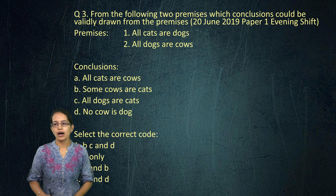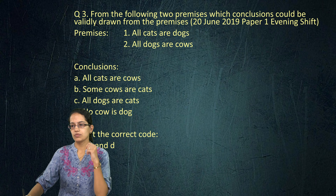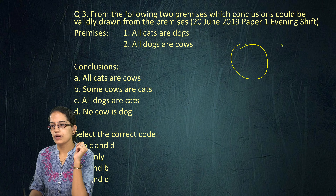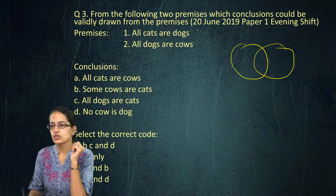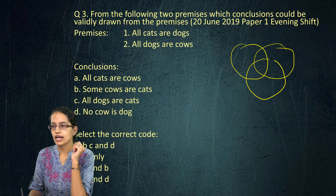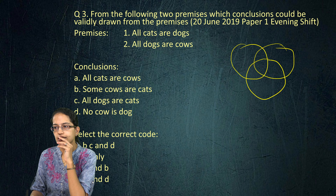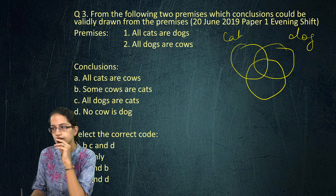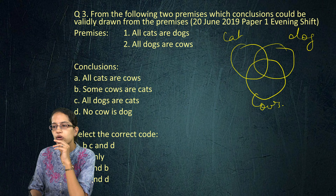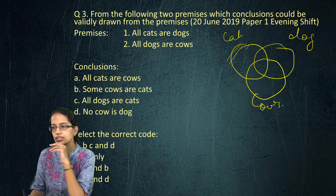The next question talks about a syllogism problem. So let me draw the simple Venn diagram that I always do. You have the syllogism problem here with two premises. All cats are dogs. So we have cats, dogs, and cows. All cats are dogs — that means there are no cats which are not dogs.